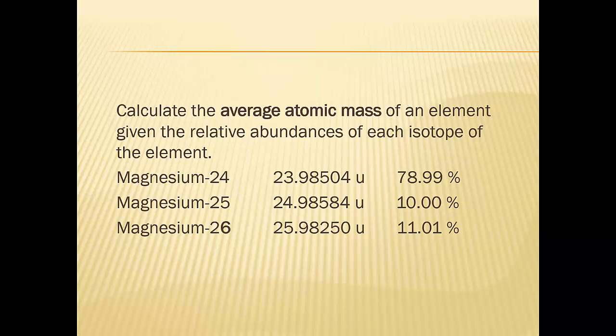Then there's a question at the bottom. The element boron has an atomic mass of 10.81. However, no single atom of boron has a mass exactly 10.81. Explain why. I want you to come up with an explanation for that one too. We will see you tomorrow.